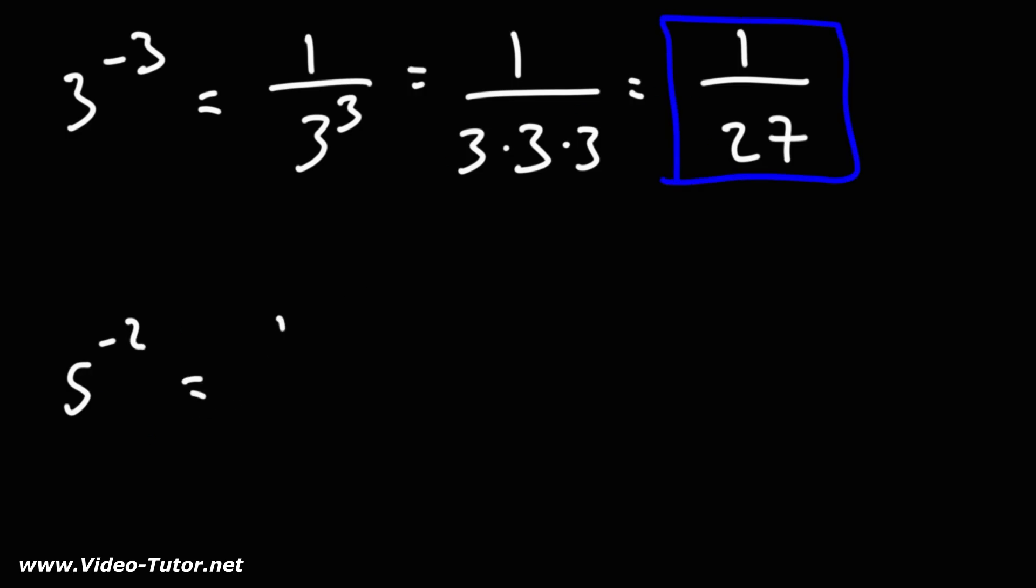For 5 to the negative 2, this is 1 over 5 squared. 5 squared is 5 times 5. 5 times 5 is 25. So that's going to be the answer, 1 over 25.